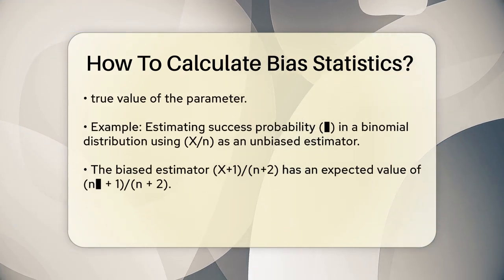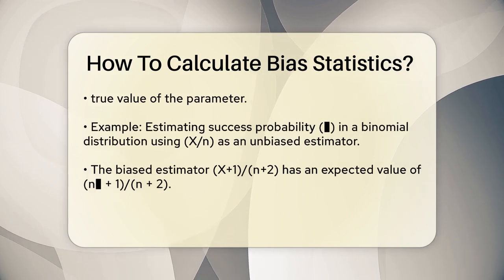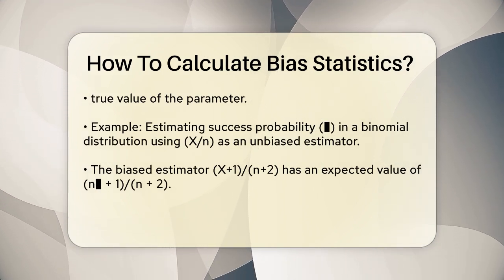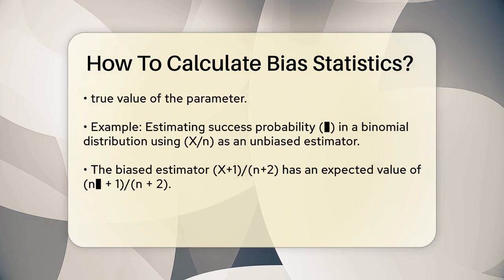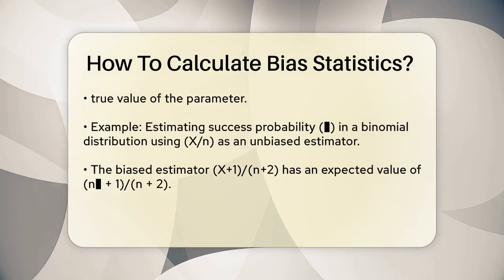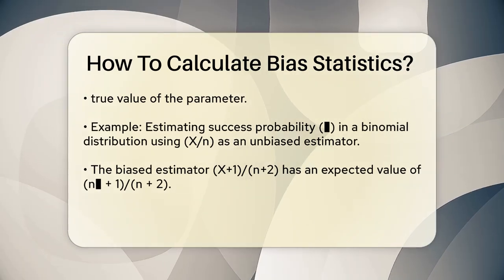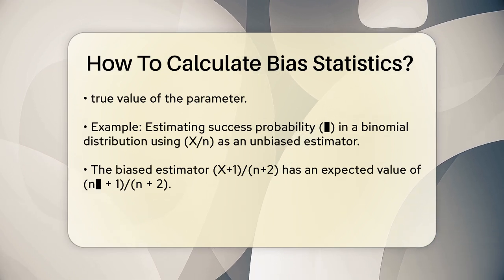For example, let's say you want to estimate the success probability, theta, in a binomial distribution. The standard estimator for theta is X/n, where X is the number of successes in n trials. This estimator is unbiased because its expected value is exactly theta.